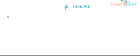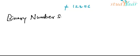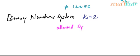Now let's look at the binary number system. What is a binary number system? Binary number system is a number system having base 2, so k equals 2. The number of allowed symbols is 2.